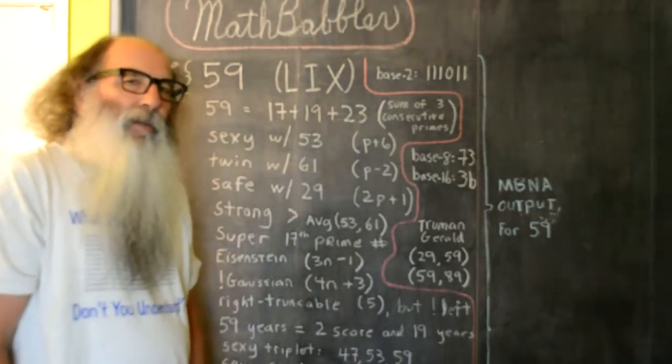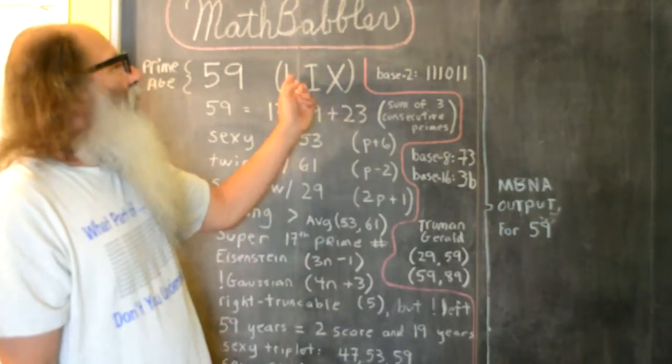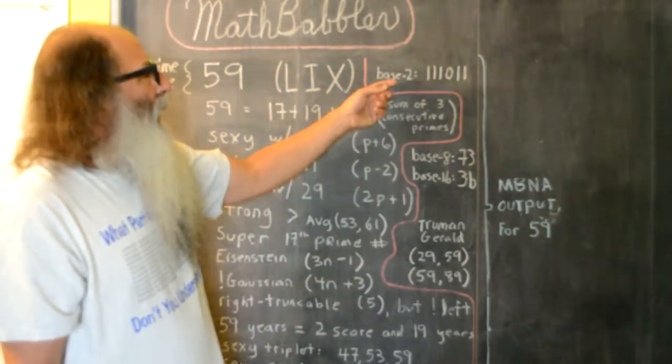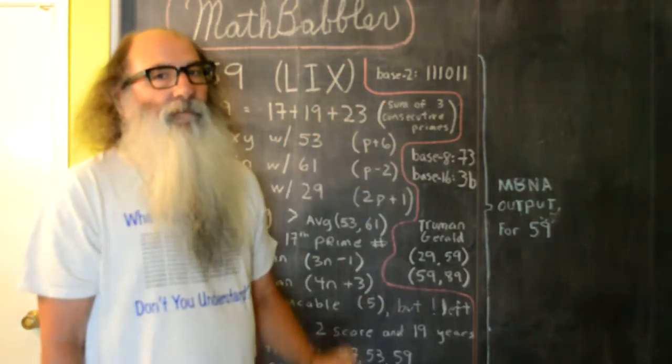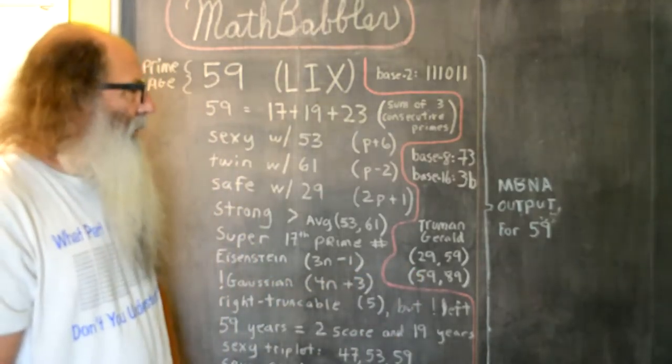If we look at some number system stuff, 59 in base 2 gives us a number that contains 5 ones, and 5 is prime.